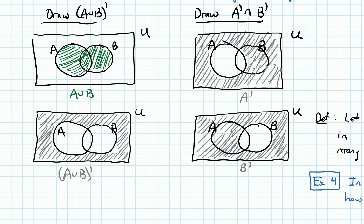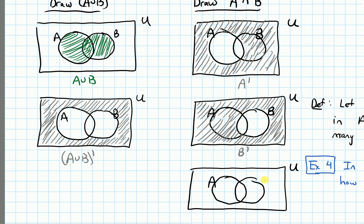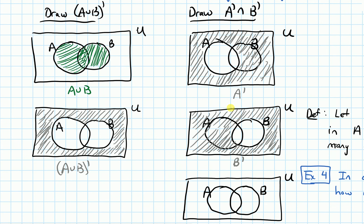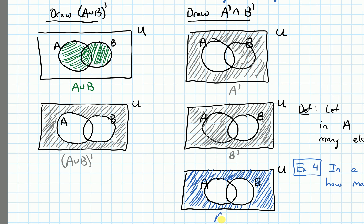Now we have to put that together and shade the intersection of those two sets. I draw a rectangle for U and circles for A and B. I have to shade the intersection of A complement and B complement, which means I shade the stuff that was common to both pictures above. The only region common to both A complement and B complement is the stuff that's outside of both circles. That is A complement intersected with B complement.